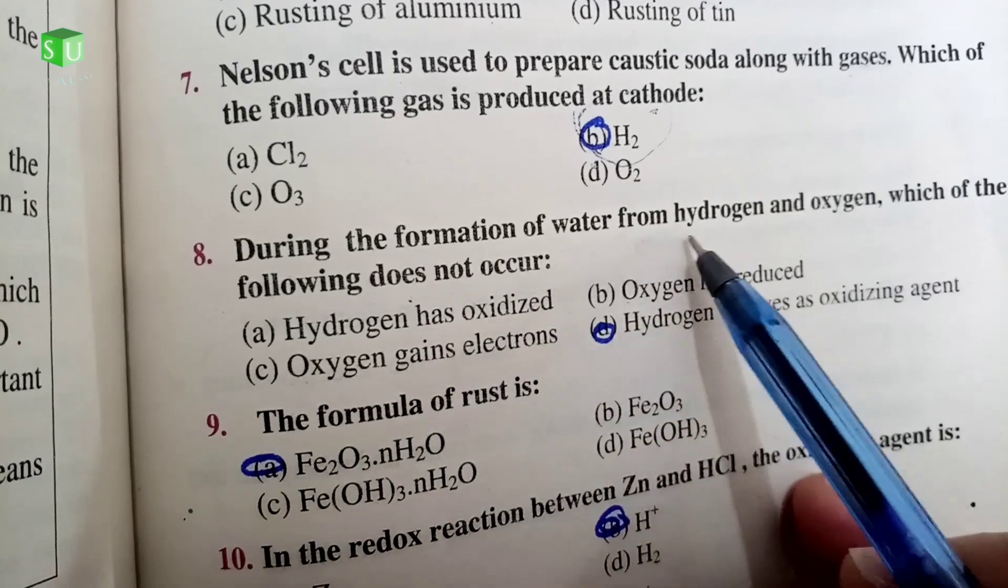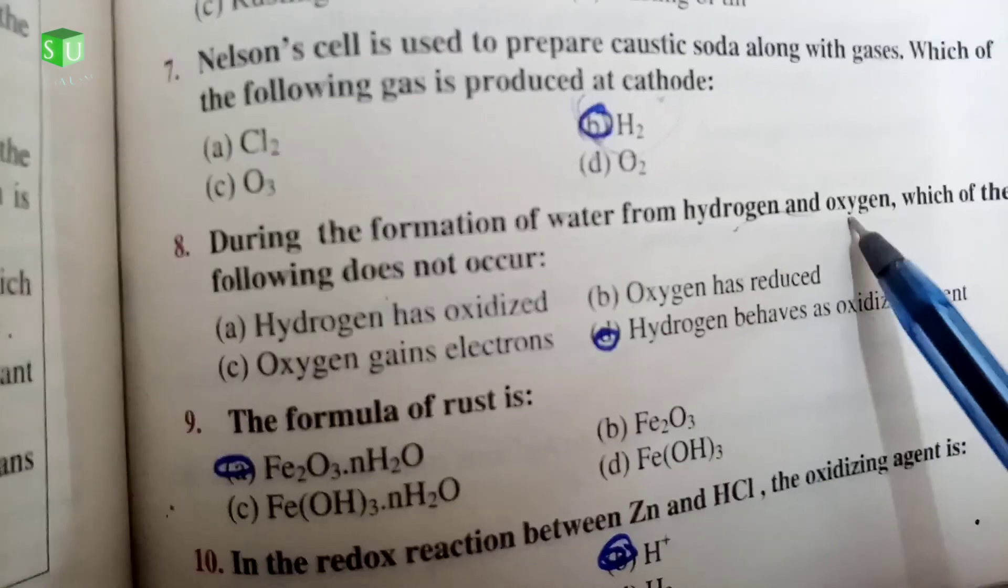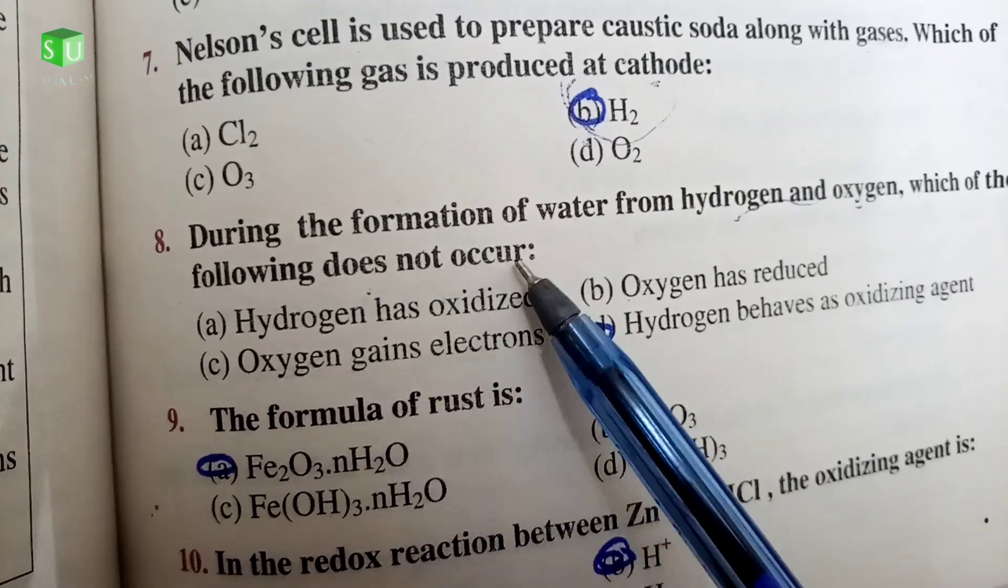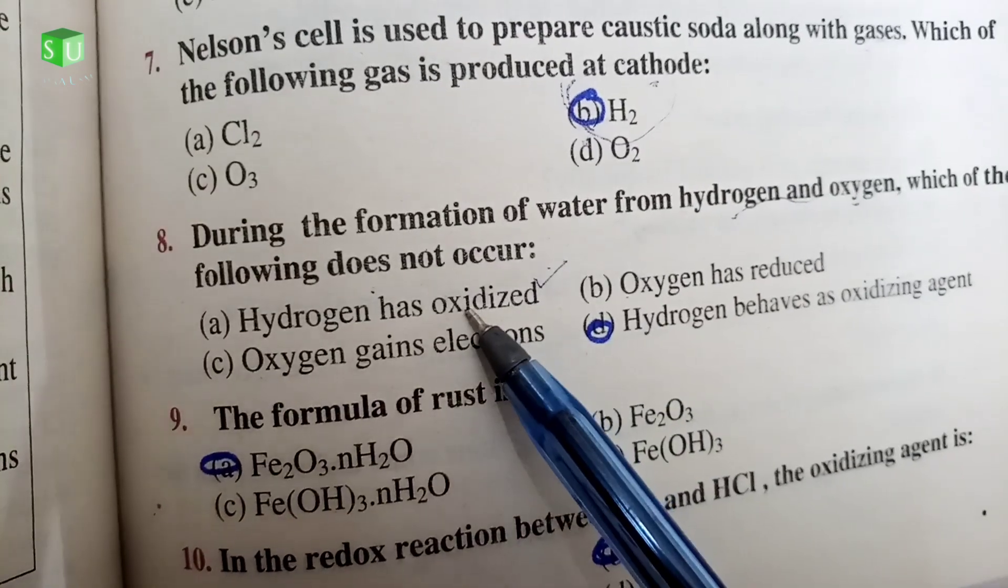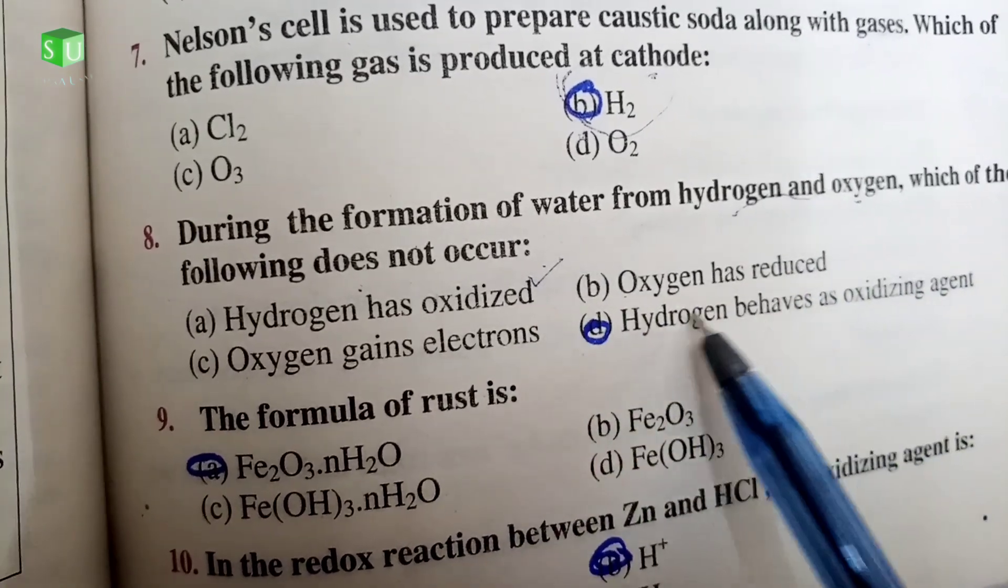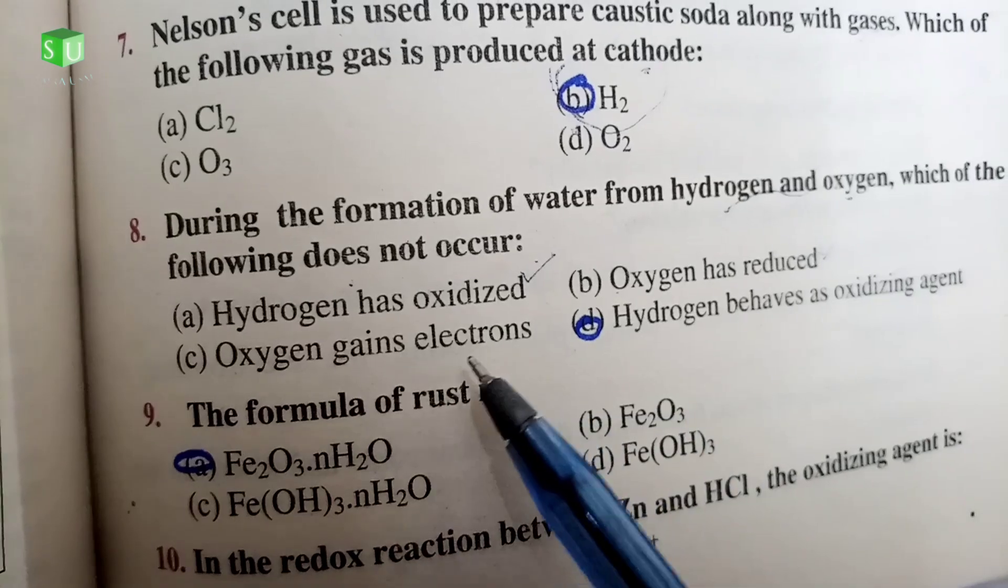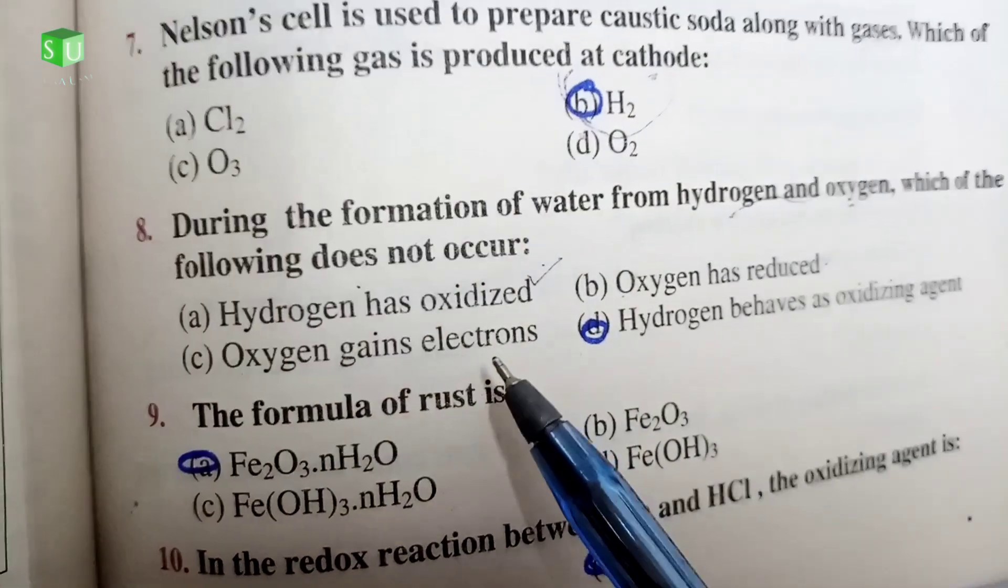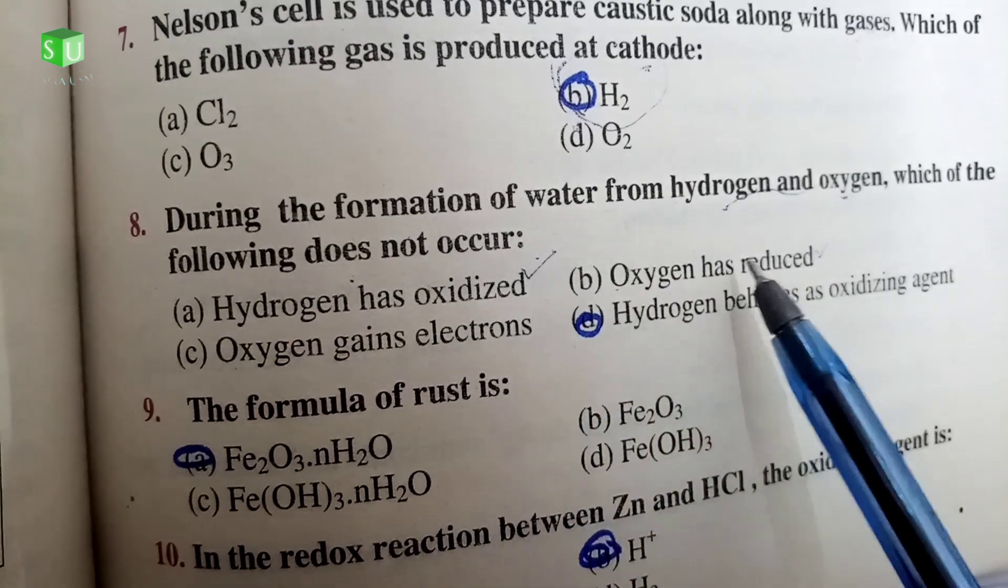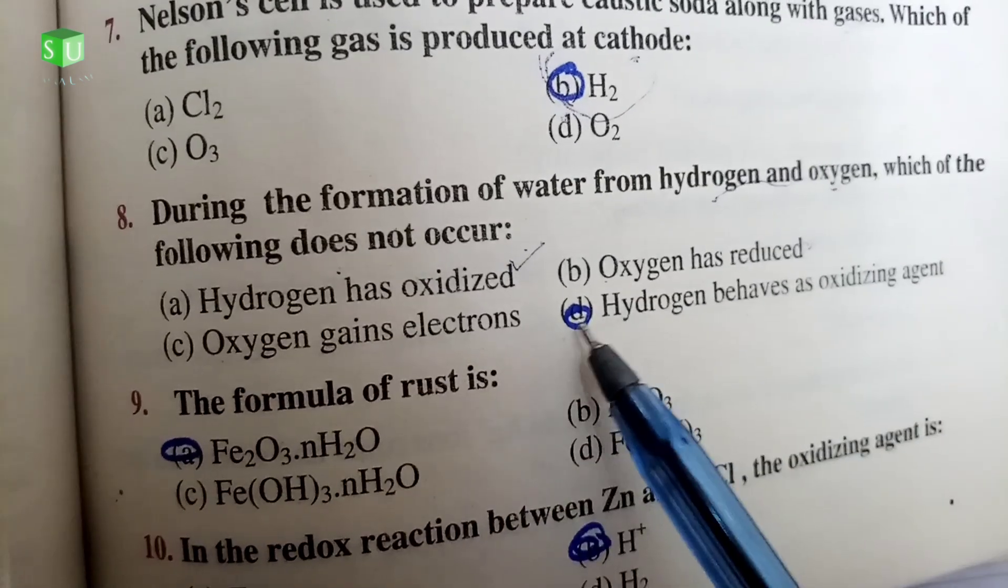Number 8: During the formation of water from hydrogen and oxygen, which of the following does not occur? You have to select which process does not happen. Hydrogen has oxidized - yes this happens. Oxygen has reduced - yes this happens. Oxygen gains electron - yes this happens because O2 gains two electrons. Hydrogen behaves as oxidizing agent - this process does not happen. So D option is correct.